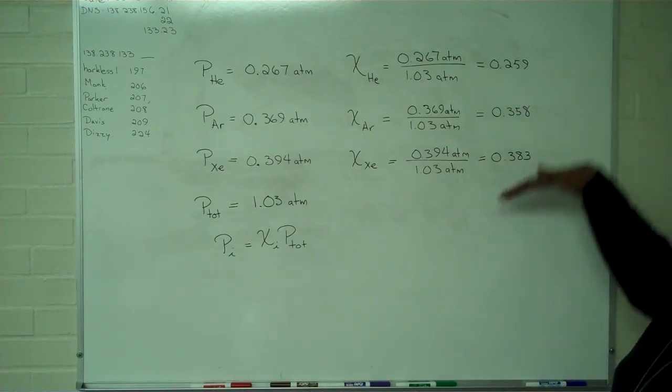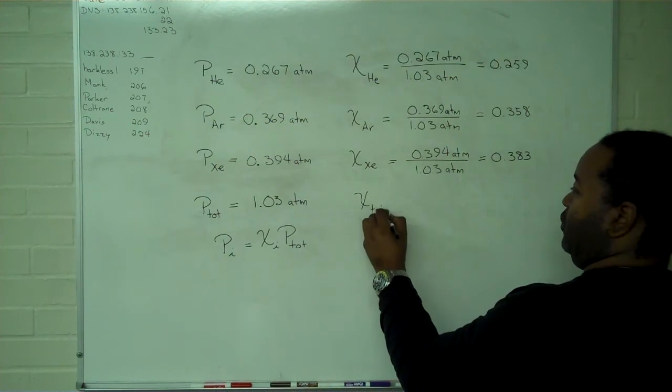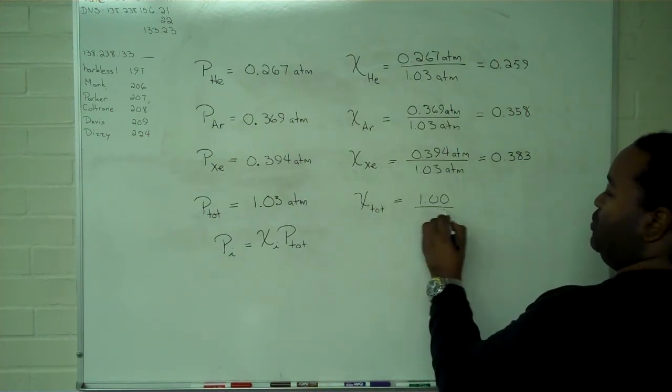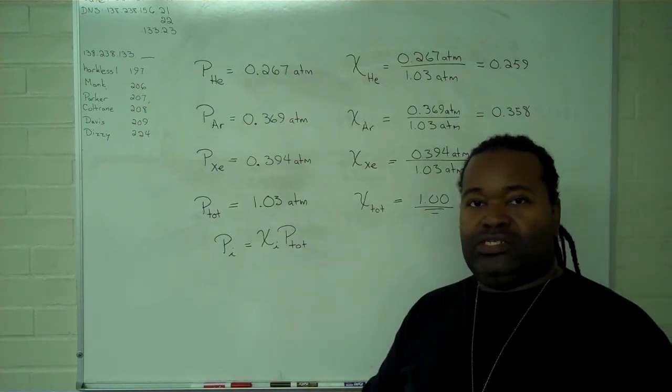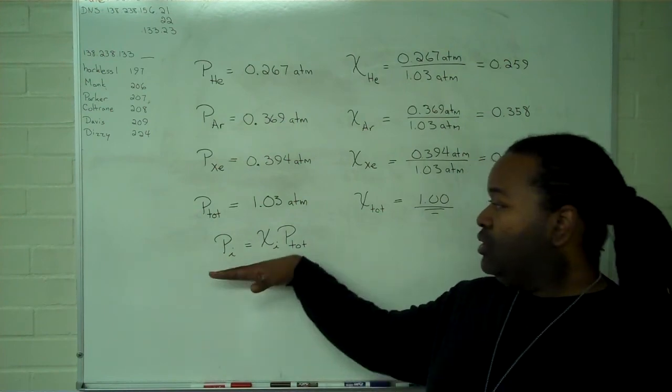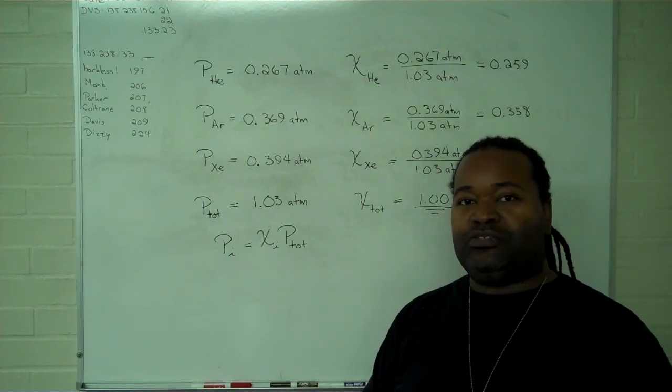If we add these three values together, we find that the total of our mole fractions is equal to 1, which means that our work checks out properly. This is a straightforward use of Dalton's law of partial pressures. We use the mole fraction form and a little bit of algebra to get our information out.